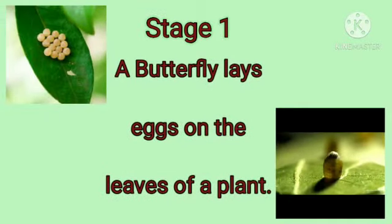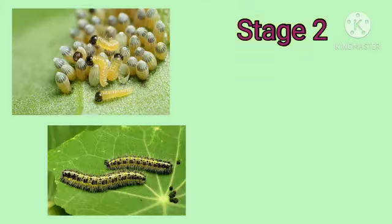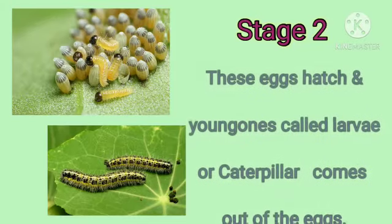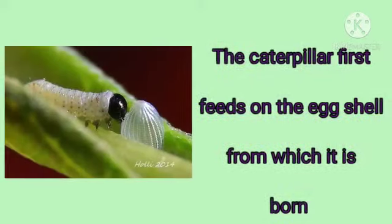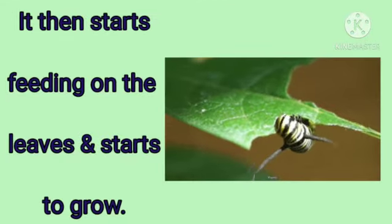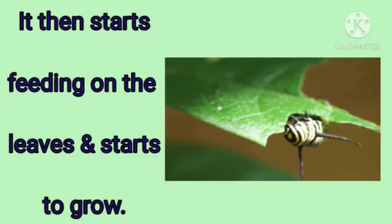Stage one: a butterfly lays eggs on the leaf of a plant. Stage two: these eggs hatch and the young ones, called larvae or caterpillars, come out of the eggs. The caterpillar first feeds on the eggshell from which it is born, then starts feeding on the leaves and begins to grow.